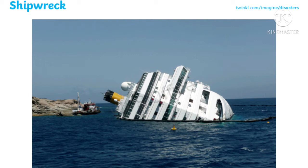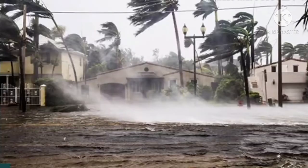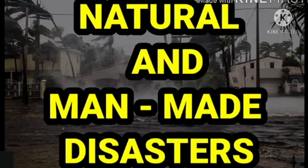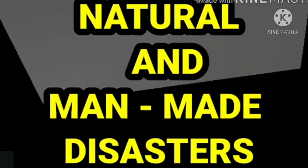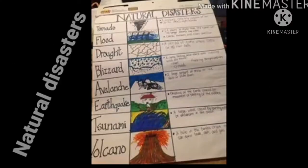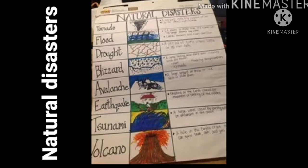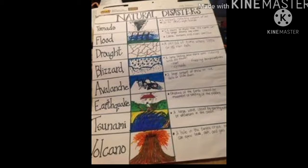The image before you is that of a shipwreck. Now, natural disasters and man-made disasters vary because the natural disaster is the damage caused by nature, while man-made disasters are disasters caused by human activities. Natural disasters include tornadoes, flood, drought, blizzard, avalanche, earthquake, tsunami, and volcano.